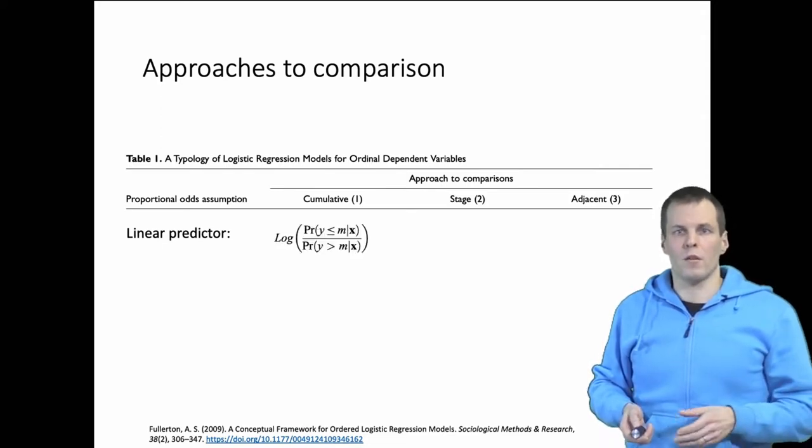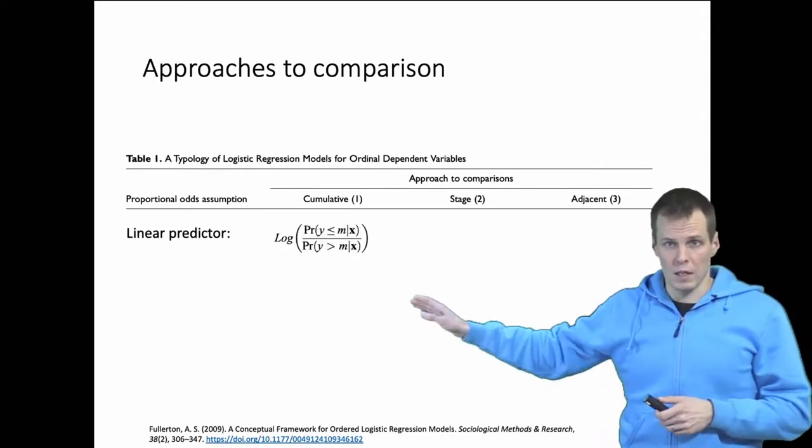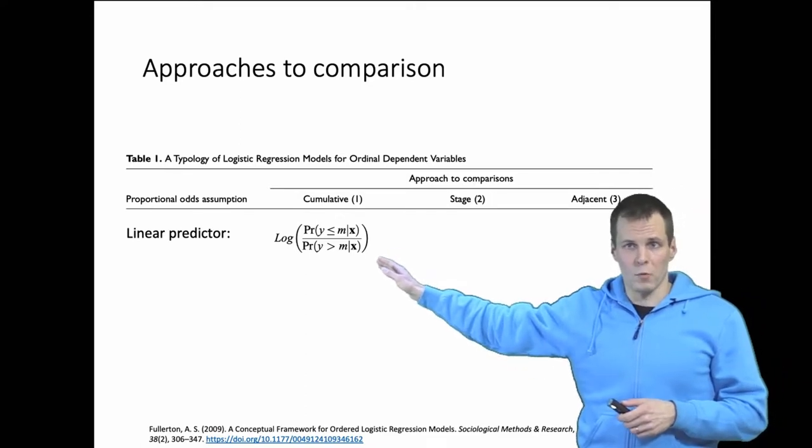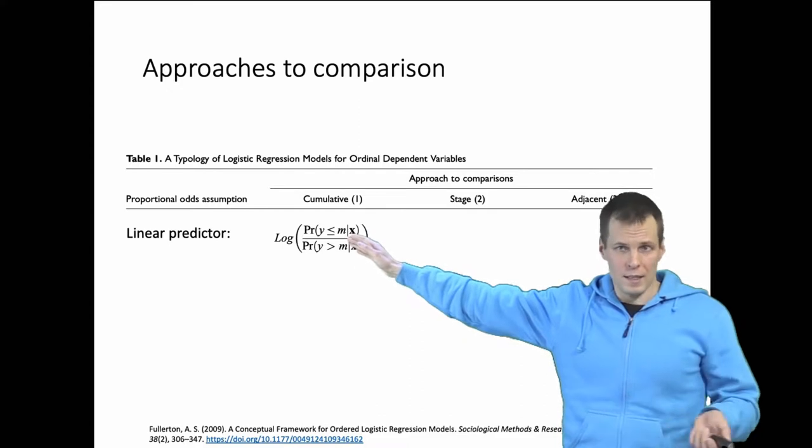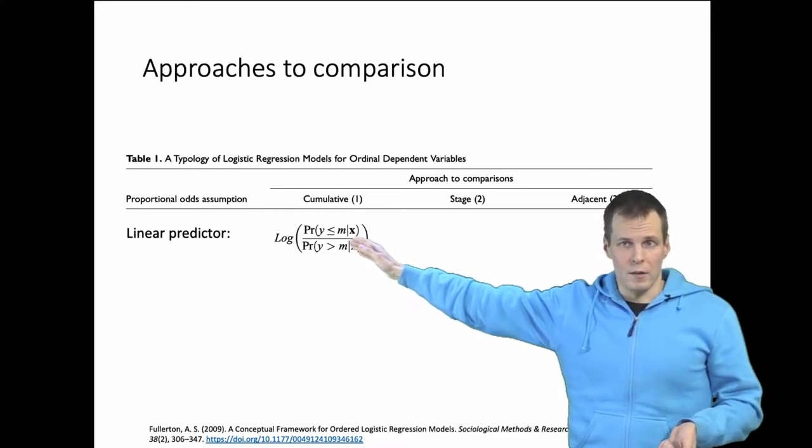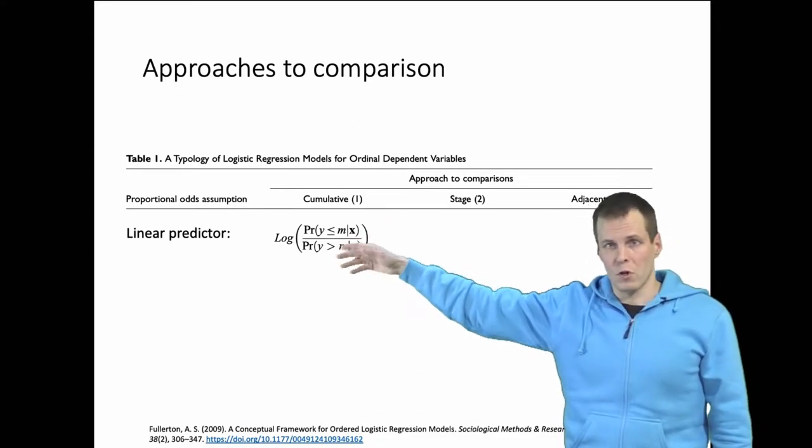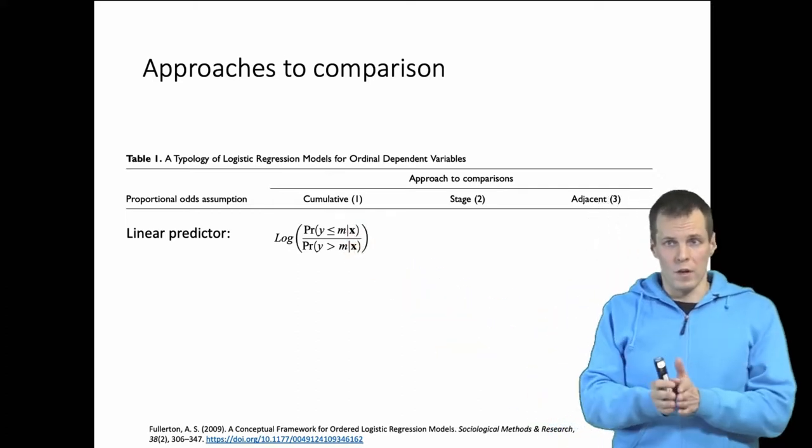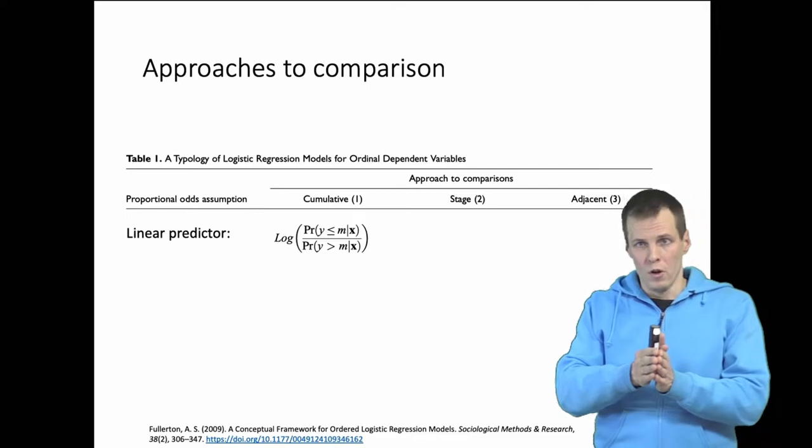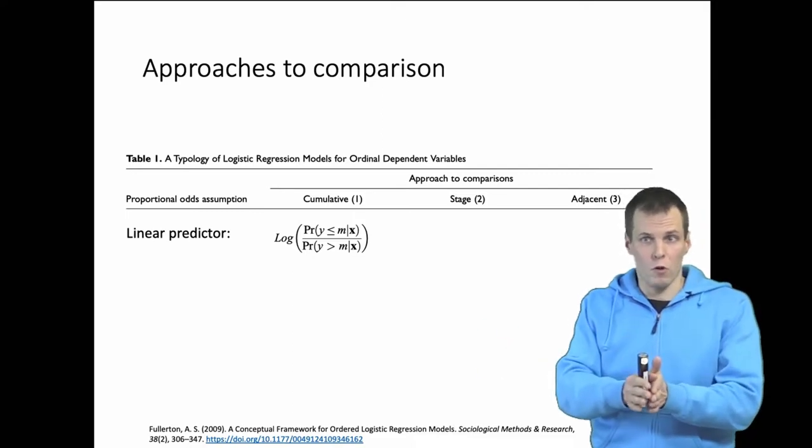The cumulative approach compares outcomes by predicting the log odds of one outcome versus another. For example, we're comparing the odds of your score being at one or more than one, or at two or more than two.